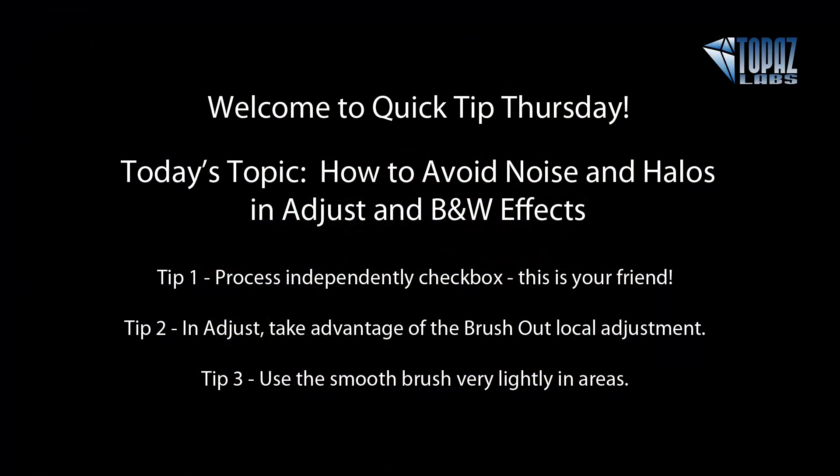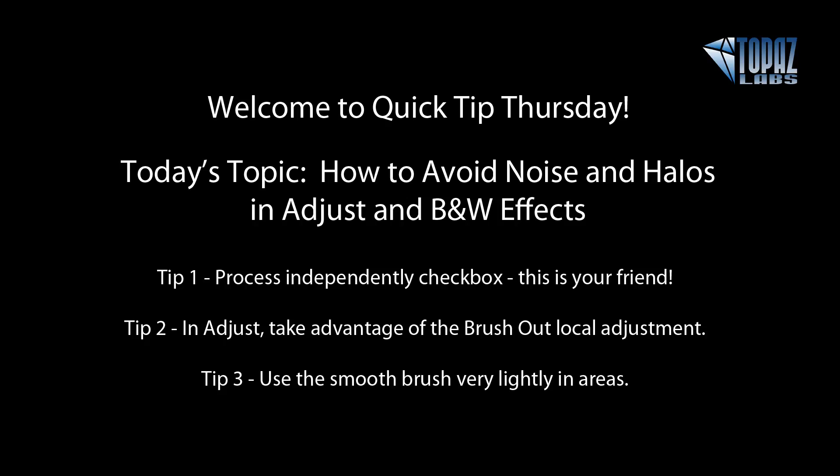We've come up on our 15-minute mark. I hope these tips help you manage noise and halos that might start occurring. They're very simple tips, but if you don't know about them, you don't know how easy it is to get rid of blemishes that make your images look over-processed. Just using the independent checkbox, the brush out, and the smooth brushes are my tips for the day. Thanks so much, and have a great afternoon. Bye-bye.